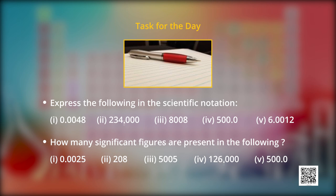Now let us do few conversions which I have shown on the screen. Friends, express the following in the scientific notation: 0.0048, 234000.8008, 500.0006.0012. Now you can see on the screen the second question: How many significant figures are present in: a) 0.0025, b) 208, c) 5005, d) 126.000, and the last one is 500.0.